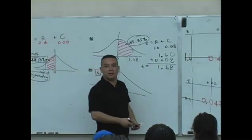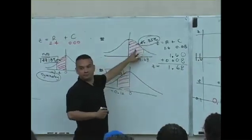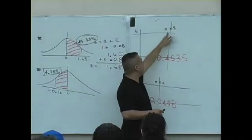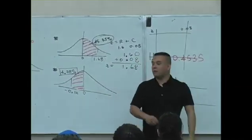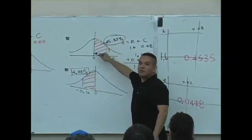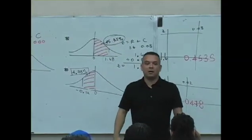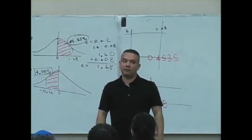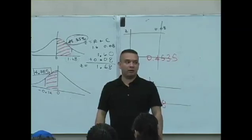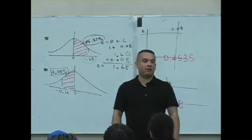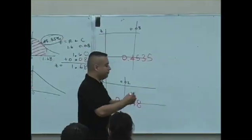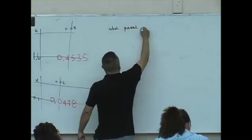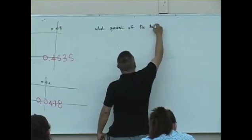This is the system that they created to determine the percent of the bell that's shaded. That's how we see what's in the 1.6 row, 0.08 column, and we get 0.4535. What that means is, this is the percent of the bell that's shaded from 0 to 1.68. Any other questions? Okay, here we go. We're still going to play the game. What percent of the bell is shaded?